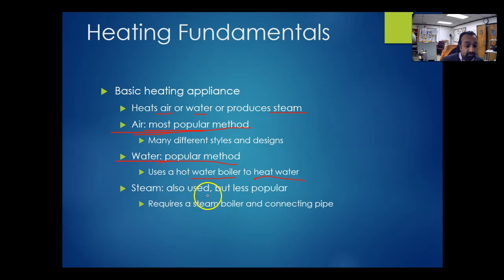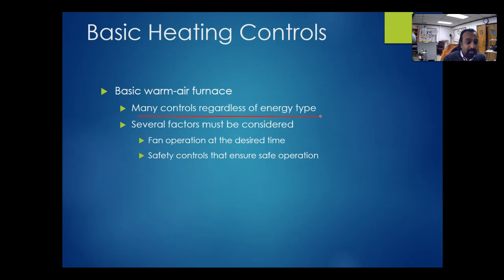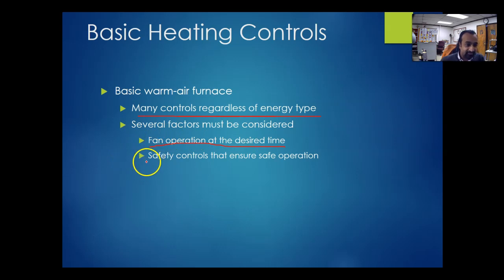Steam is used less and is less popular, with no new installations being done. A steam system requires a steam boiler and connection piping — either one pipe or two pipe systems. For basic warm air controls, regardless of the energy type, you need to control the temperature coming into the house, the dampers to distribute the air, and the fan operation at desired times, including fan speed and airflow.